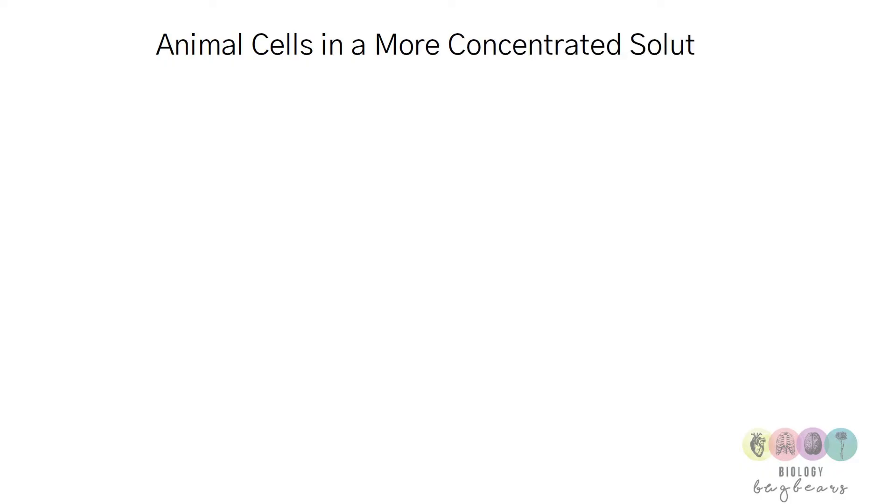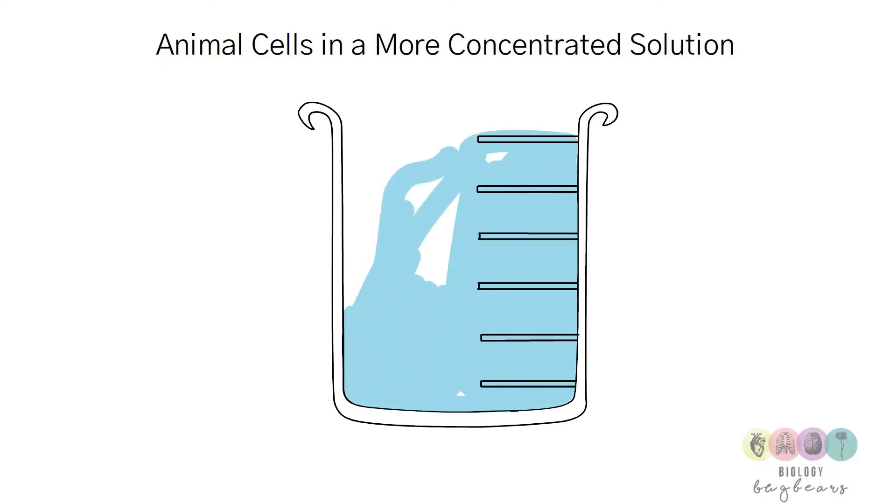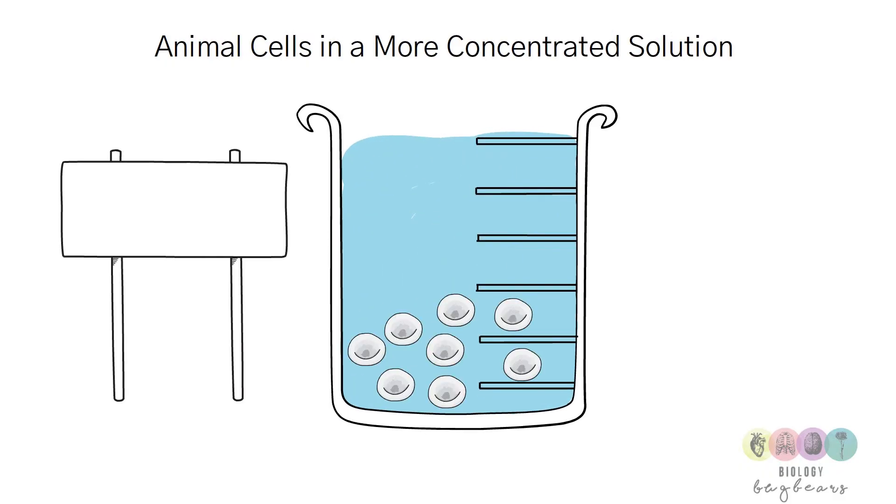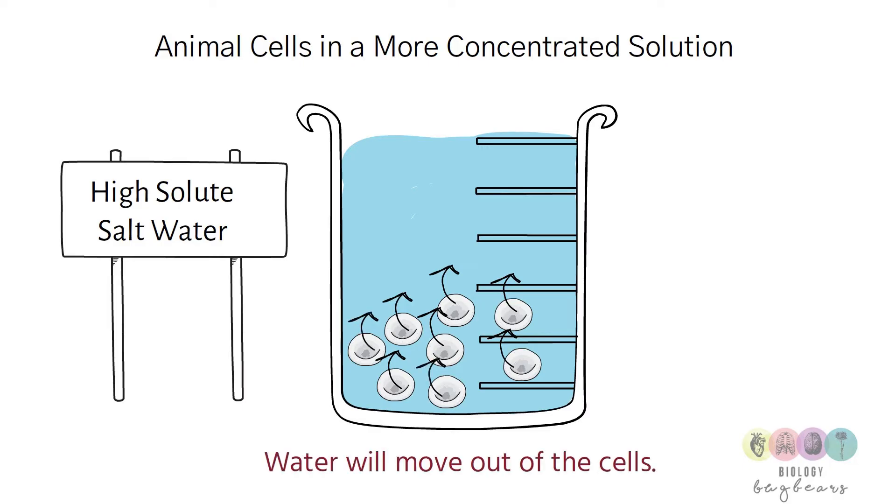If animal cells are placed in a more concentrated solution, this time think of a beaker of very salty or very sugary water. Well this time the water is going to move from where there's lots of it inside the cells to where there's less of it in that salty or sugary solution, so water moves out of the cells.